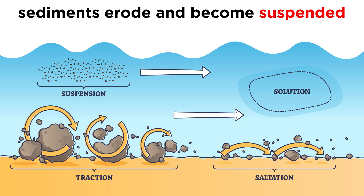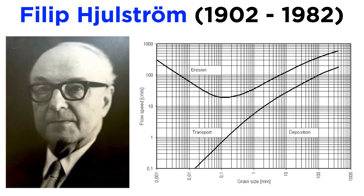Saltation and traction both cause sediments to bash into one another and break down into smaller pieces, sometimes becoming small enough to become suspended in the flow. The Swedish geographer Philippe Hjulström discovered a relationship between sediment size, stream flow velocity, and whether the sediment would be transported, deposited, or eroded. For example, a millimeter-sized grain of sand will remain deposited on the stream bed until the flow speed exceeds 10 centimeters per second and the grain begins to saltate. As long as the flow speed stays above 10 centimeters per second, the sand grain will continue to saltate downstream.